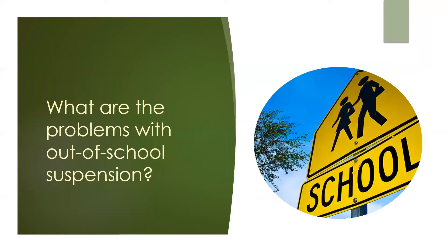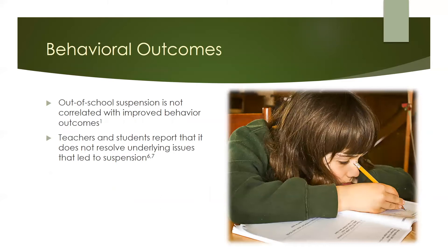So what are the problems with out-of-school suspension? One of the most important things to know about out-of-school suspension is that it has not been shown to be effective at changing behavior. Behavior does not tend to improve after students are suspended. In fact, students are often suspended multiple times. Many involved in this process, including students and teachers, have reported that they feel that out-of-school suspension does not resolve the underlying issues that caused the problem which led to suspension.